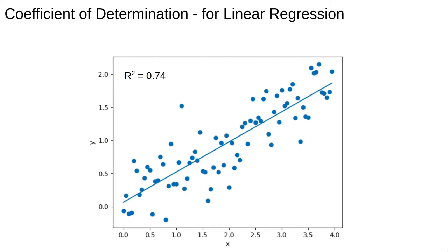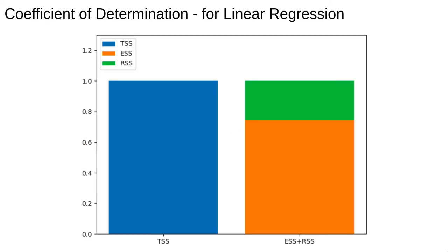Here's an example of a linear regression on some data. The R squared value is 0.74. Here, I've plotted the total sum of squares for this fit, next to the explained and residual sum of squares. First, you can see they are in fact equal, and second, here we see about 25% of the variation the data is not explained by the model.